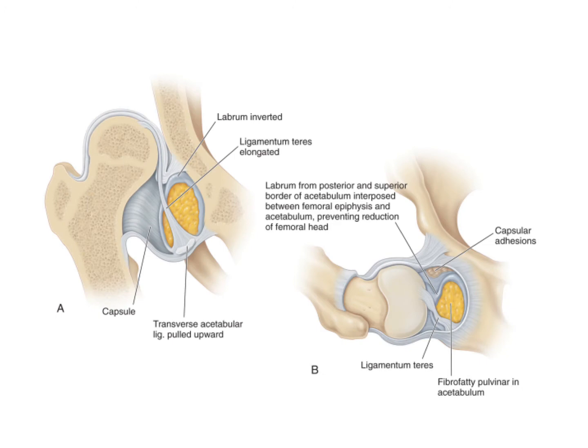A dislocated hip develops secondary changes. The capsule becomes tight in an hourglass fashion. Ligamentum teres is stretched, thus becomes bulkier. The labrum, or limbus, which is a fibrocartilaginous rim around the acetabulum, gets pushed by the dislocated femoral head into an inverted position. The acetabular cavity gradually fills up with fibro-fatty tissue called pulvinar. All these secondary changes may, with time, increase the difficulty and prevent reduction of the femoral head into the acetabulum.